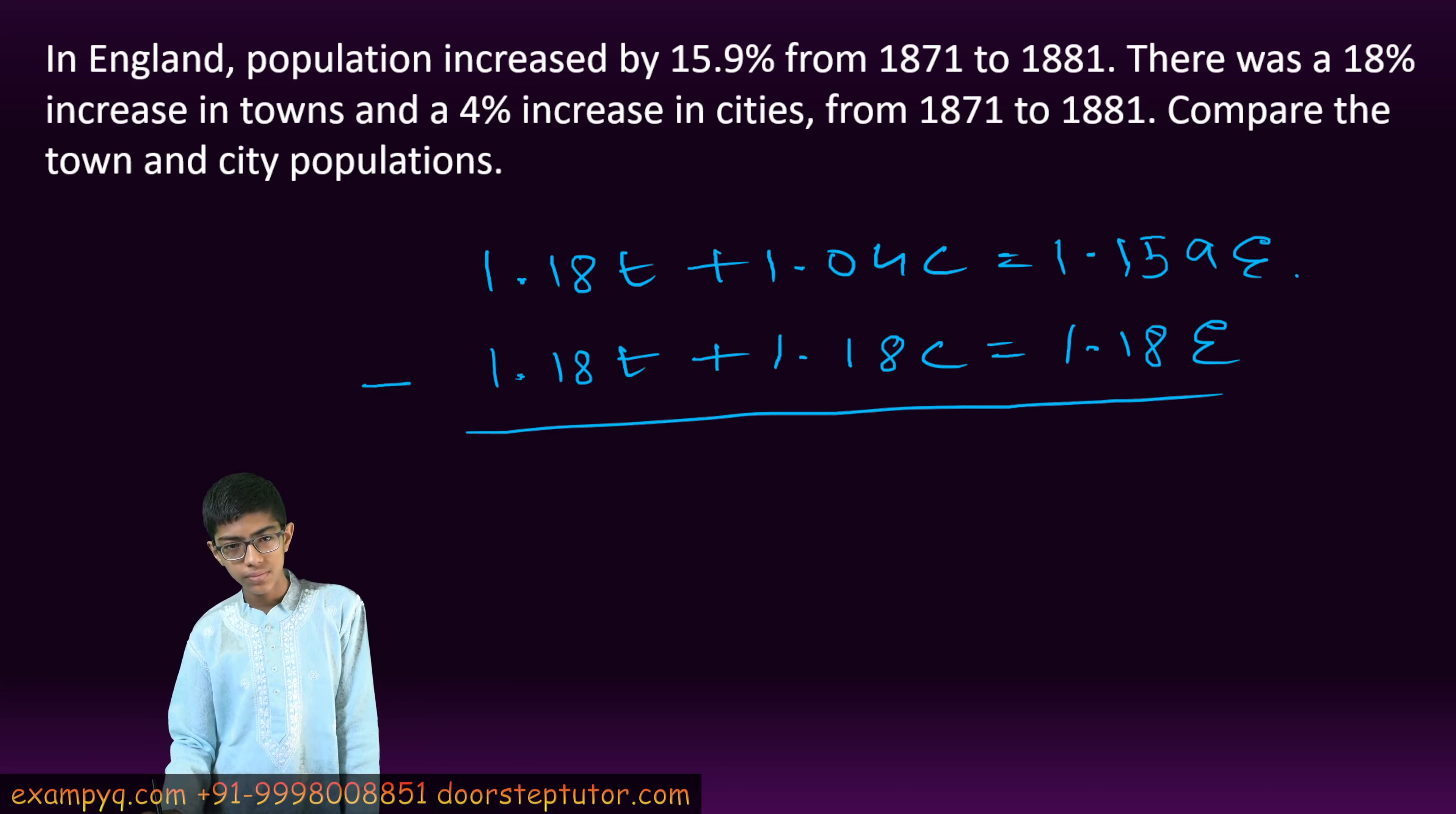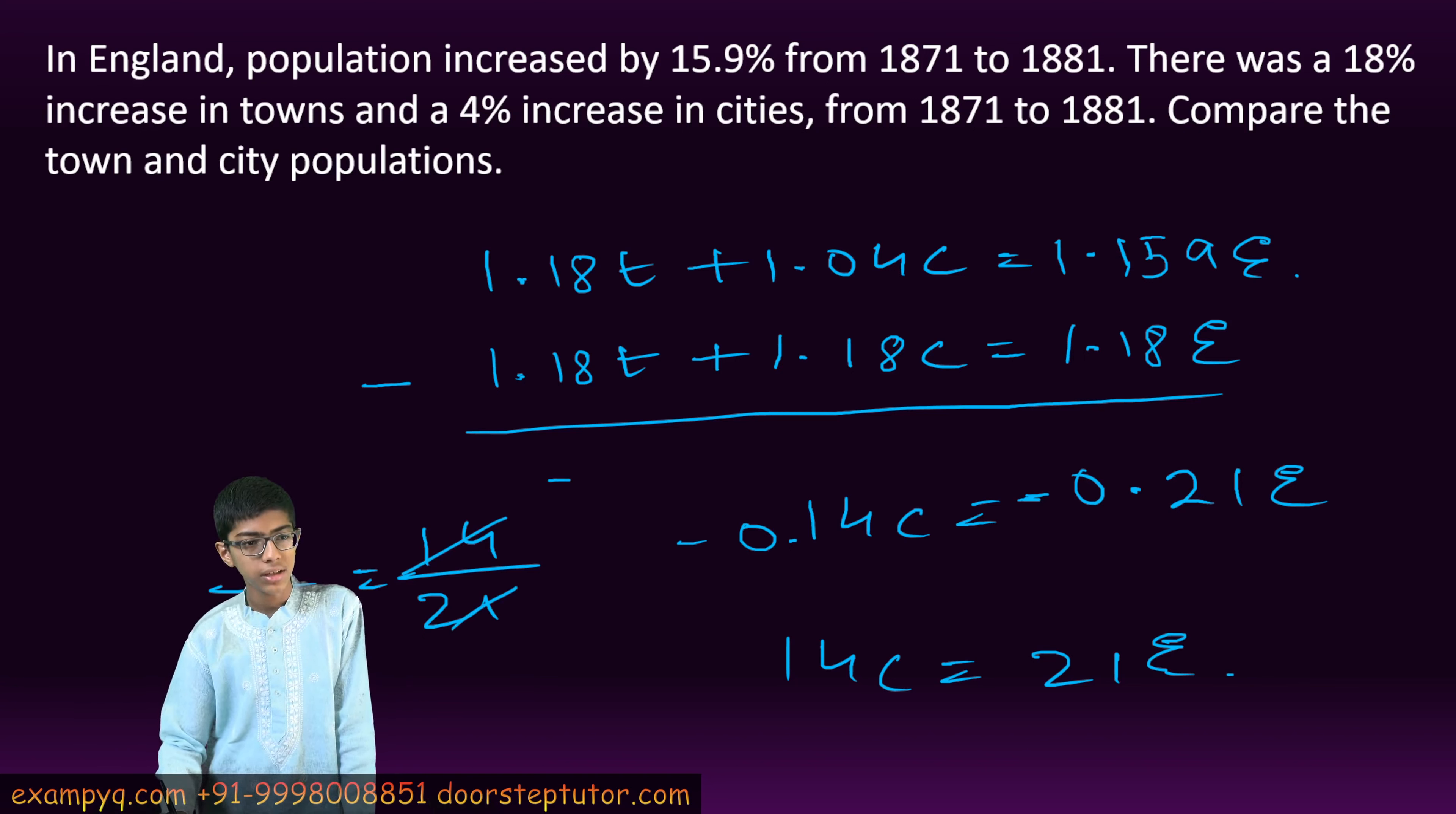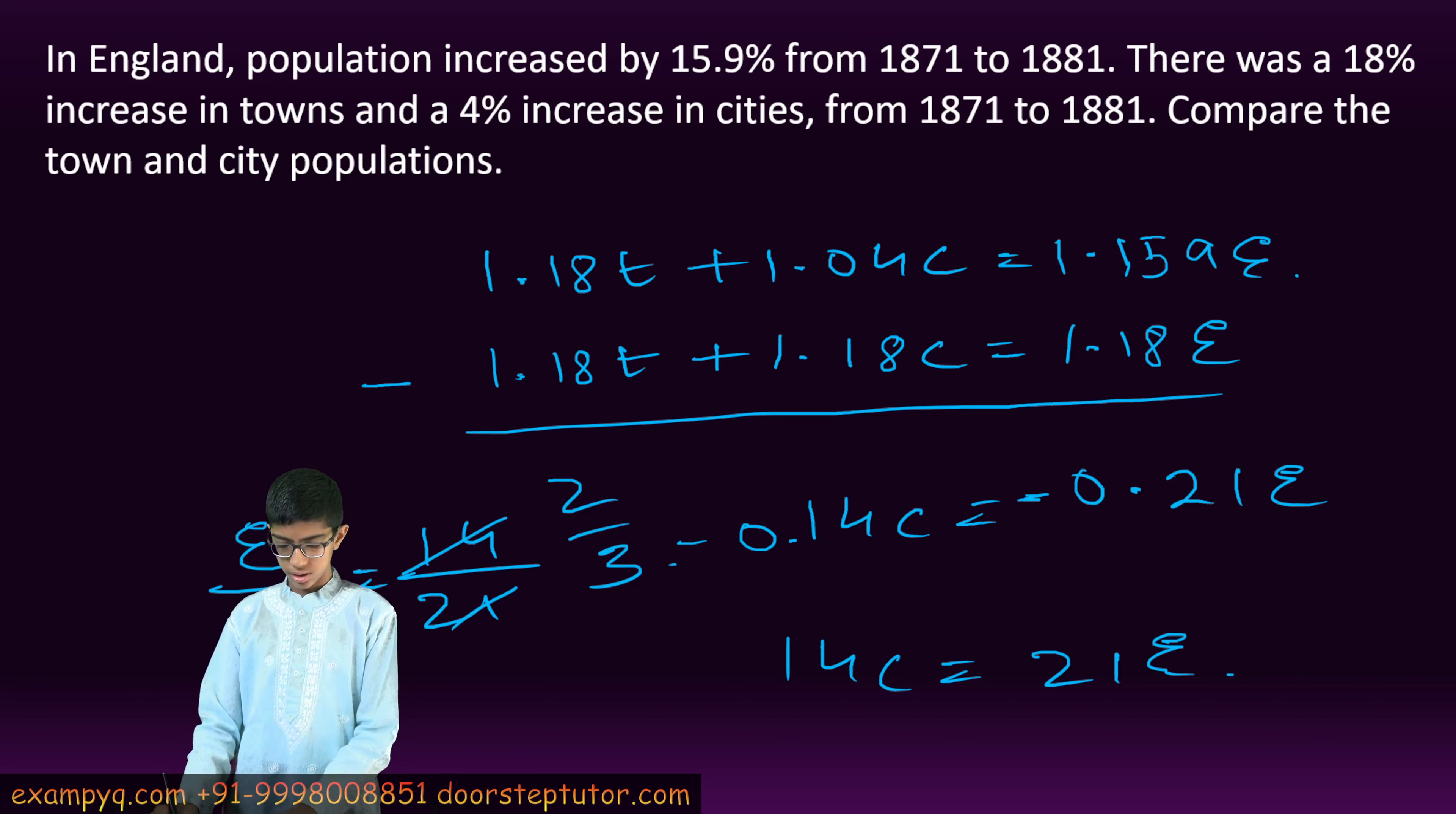Consequently, the ratio between C and E, that is E by C, equals 14 by 21. We can simplify this. That is 2 by 3. So we have E by C equals 2 by 3.